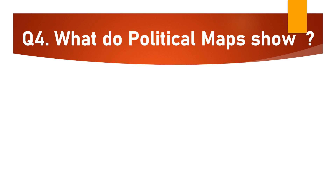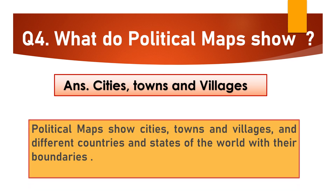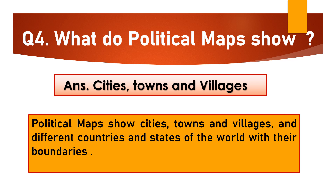Question No. 4: What do Political Maps show? They show cities, towns and villages. Political Maps show cities, towns and villages and different countries and states of the world with their boundaries.